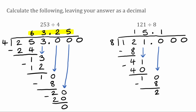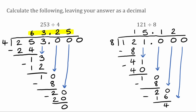We've still got a remainder, so we bring down the next zero to get 20. How many times does 8 fit into 20? That'll fit twice because 8 times 2 is 16, leaving a remainder of 4. We carry down the next zero to get 40. How many times does 8 go into 40? Five times, because 8 times 5 is 40. Remainder zero — we've finished. Our final answer is 15.125.